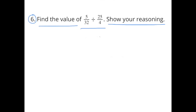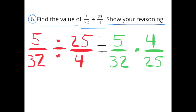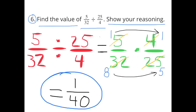Number 6: Find the value of 5 over 32 divided by 25 over 4. 5 over 32 divided by 25 over 4 is the same as 5 over 32 times 4 over 25. Simplifying: 5 divided by 5 is 1, 25 divided by 5 is 5, 4 divided by 4 is 1, and 32 divided by 4 is 8. Multiplying straight across: 1 times 1 is 1, and 8 times 5 is 40. The value is 1 fortieth.